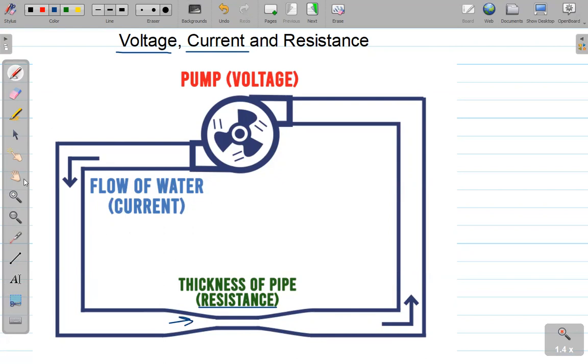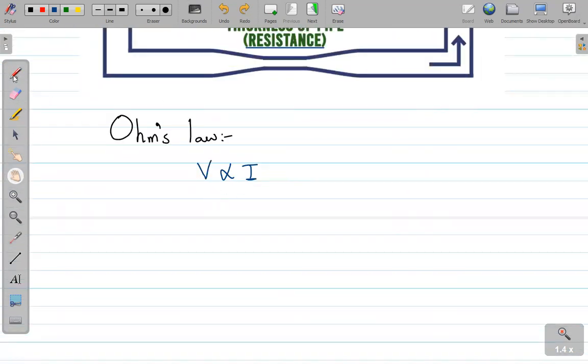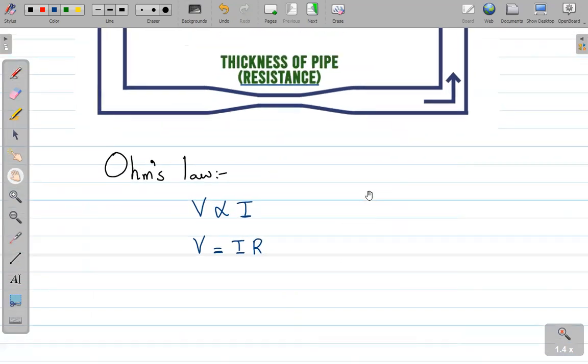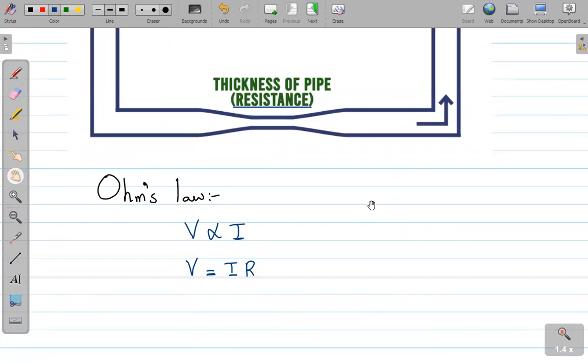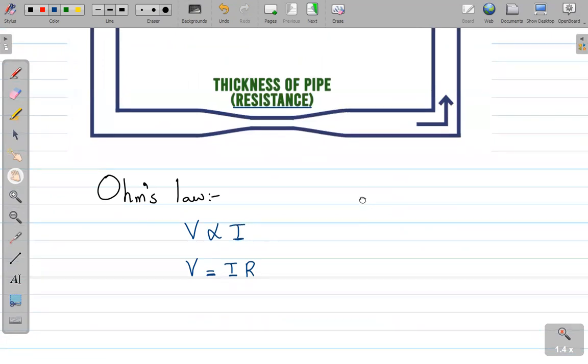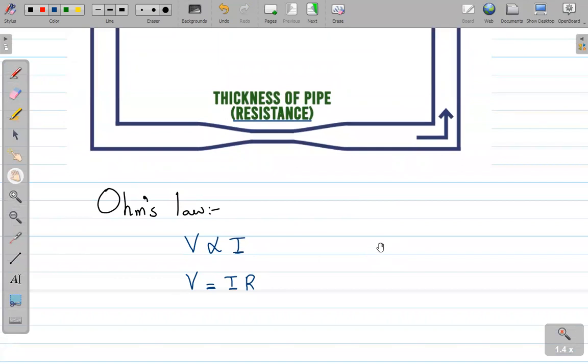So yes, the voltage is directly proportional to current. But if I remove the proportionality sign, I will have to introduce the constant, and that is basically resistance. Yes, voltage is directly proportional to current, but that only depends on the resistance if the resistance is constant. And so you get this famous formula for Ohm's law: V equals to IR.